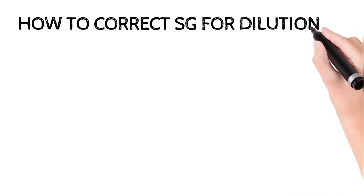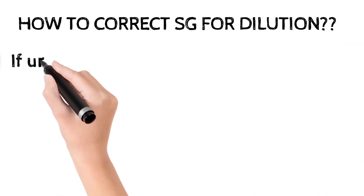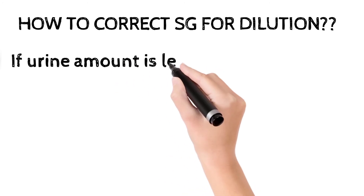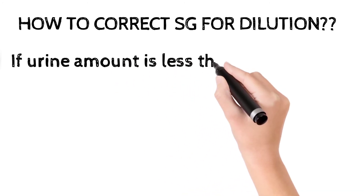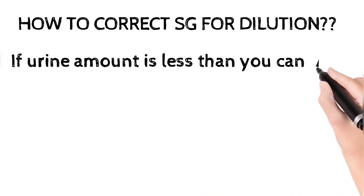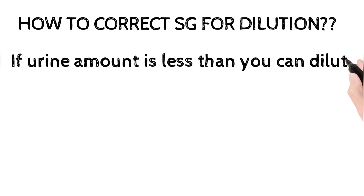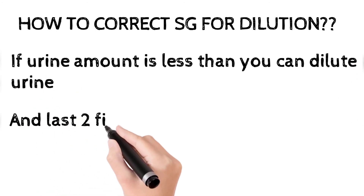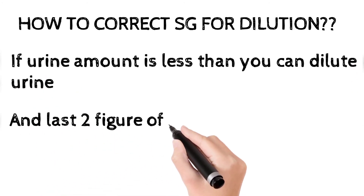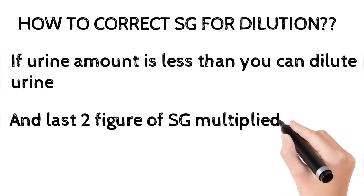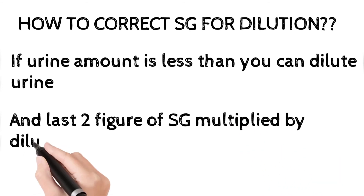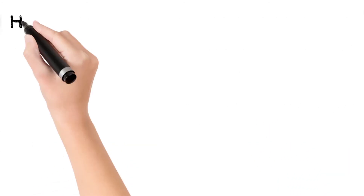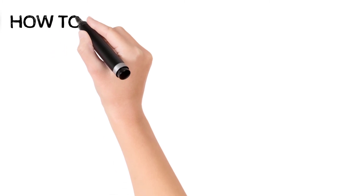To correct specific gravity for dilution: if the urine volume is very less — 5 to 10 ml — you can dilute the urine and then take the specific gravity reading. However, you must multiply the last two figures of your specific gravity by the dilution factor.